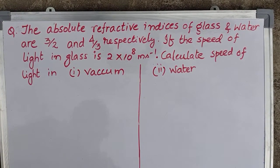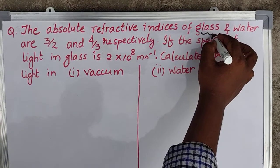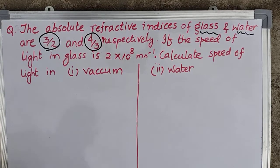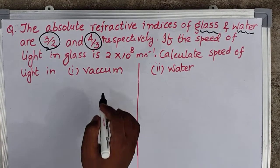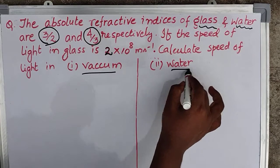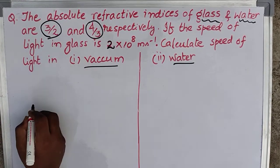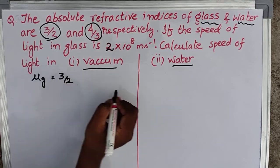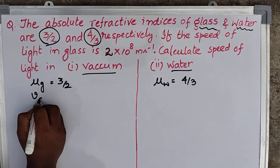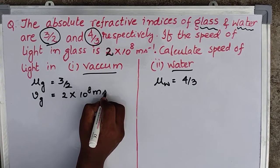In this question, the absolute refractive indices of glass and water are given. The refractive index of glass is 3/2 and water is 4/3. If the speed of light in glass is 2×10⁸ m/s, we are supposed to calculate the speed of light in vacuum and water. So let's write what is given: refractive index of glass is 3/2, refractive index of water is 4/3, and velocity of light in glass, Vg, is equal to 2×10⁸ meter per second.